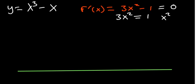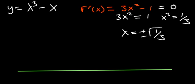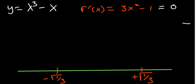Setting the first derivative to zero, you get x squared equal to one over three, so x equals plus or minus the square root of one over three. We have two turning points: negative root of one over three and positive root of one over three. We now need to understand the behavior of the curve between and outside these two turning points.